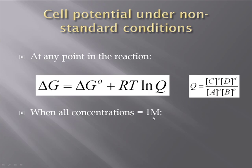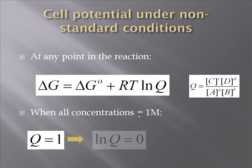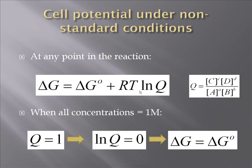The first set of conditions we'll look at is when all concentrations are 1 molar — standard conditions. If all concentrations of C, D, A, and B were all 1 molar, Q would become 1. Then ln of Q would be ln of 1, equal to 0, and this term would go away. Under those conditions, delta G equals delta G0. This tells you what delta G0 means: it's the driving force for the reaction under standard conditions.